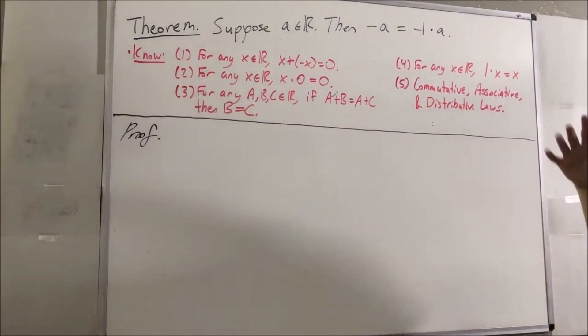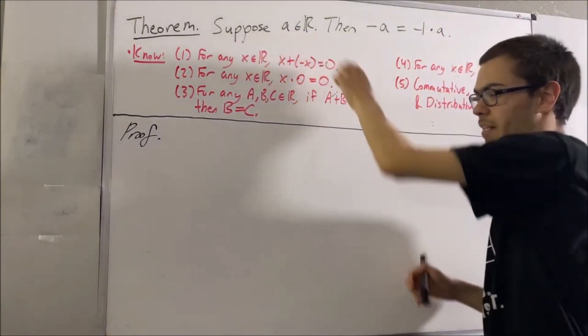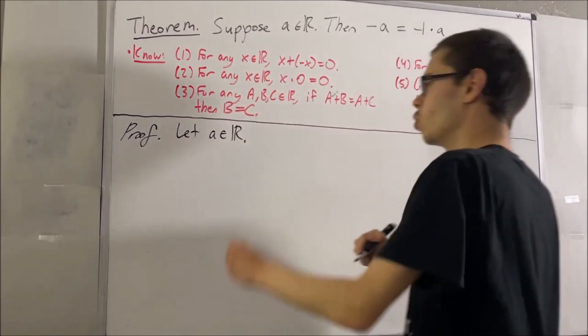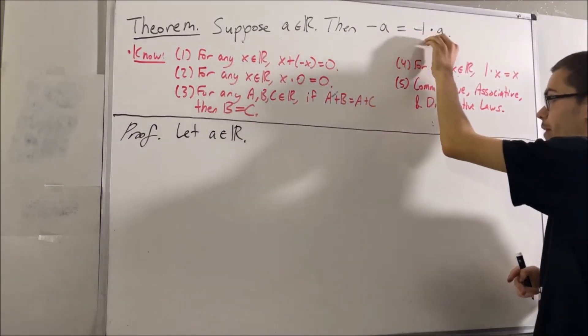Okay, so now let's get into the proof. So, to start out the proof, let's give ourselves some real number a. Our goal, with this real number a, is to show that the negative of a is equal to negative 1 times a.